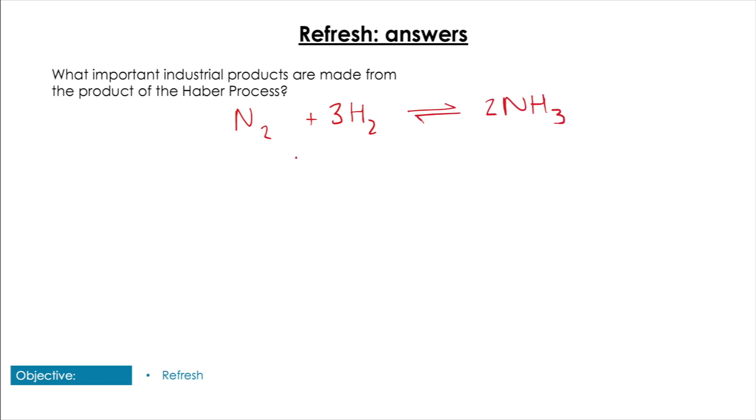We've got nitrogen reacting with hydrogen to form ammonia, and that is the product we want. Ammonia is a very useful industrial product used in the manufacture of fertilizers, which help increase the yield of crops.